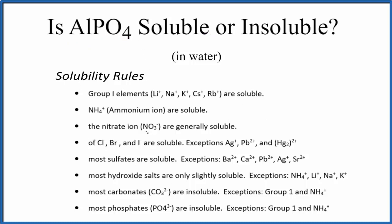As we look at the rules, I don't see aluminum, but down here, most phosphates are insoluble in water. The exceptions are elements in Group 1, like sodium and potassium, and ammonium phosphate. But aluminum phosphate will be insoluble in water according to the solubility rules.